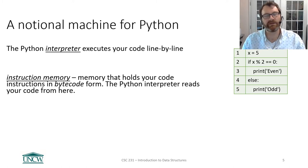The first is what we call instruction memory. This is the memory that holds the instructions for your code. I've got a little tiny simple Python program here that prints out if a number is even or odd. This tiny little program goes into a place called instruction memory. And Python is going to read your code line by line from there.